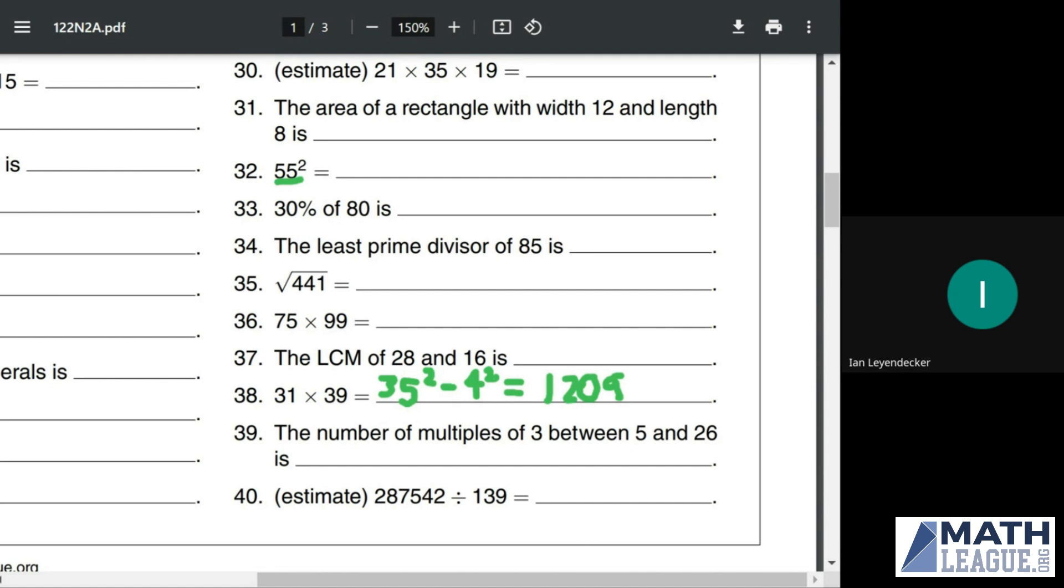The number of multiples of 3 between 5 and 26 is blank. Well, the smallest is 6. That's 3 times 2, and the largest is 24, which is 3 times 8. So there's 2 to 8 or 1 to 7 multiples of 3.